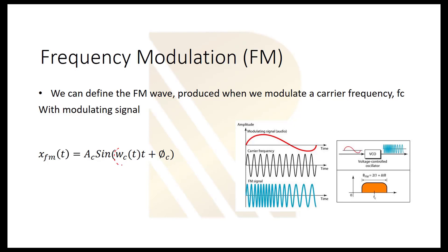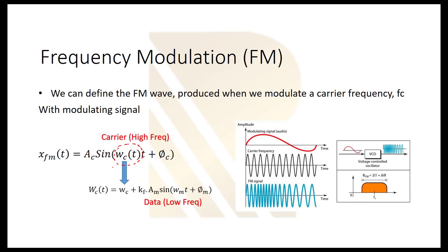This time, as you see, the frequency of the carrier is not constant — the frequency changes. The instantaneous frequency is: ωC = ωC_default + KF · xM(t), where KF is a gain coefficient and xM(t) is our data. So this time we are putting our data inside the frequency of this carrier.